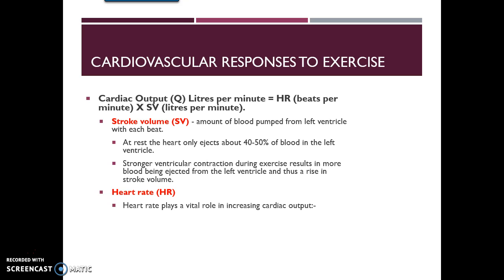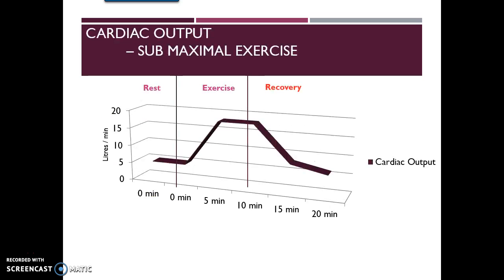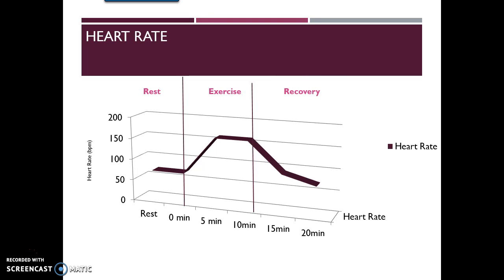Heart rate plays a vital role in increasing cardiac output. During submaximal exercise, it increases until oxygen demands have been met, reaching a plateau or steady state. At maximal levels, it continues to increase in a linear fashion until maximal heart rate is achieved. The graph shows total cardiac output during submaximal exercise, along with stroke volume and heart rate individually.